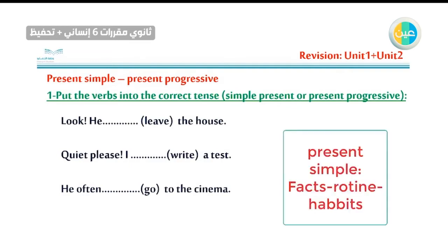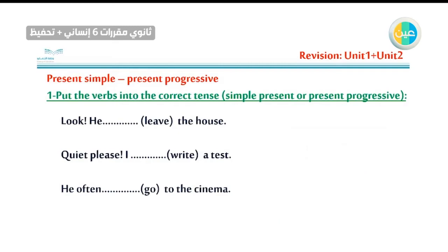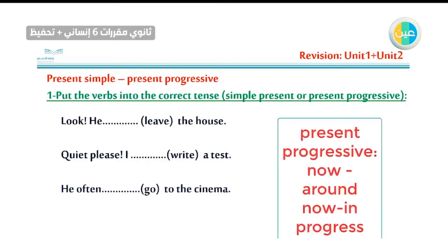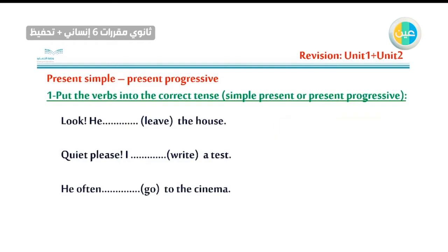Do you remember? Present simple is for daily routines, facts, and habits. While progressive, we are discussing or expressing actions that are happening now or around now. Go back to the previous episodes — you will find a full explanation for these two tenses.